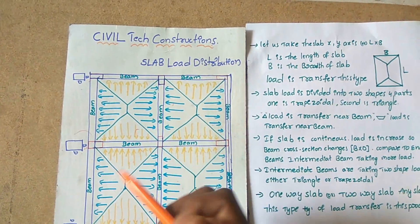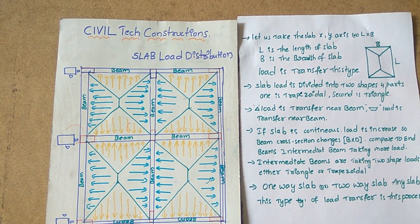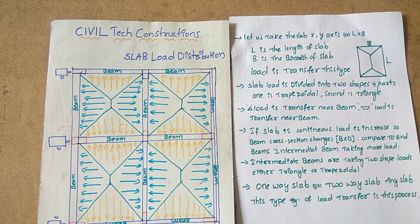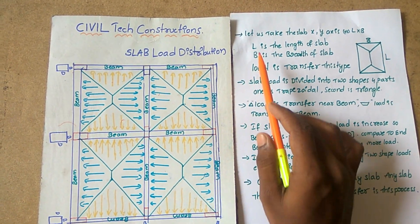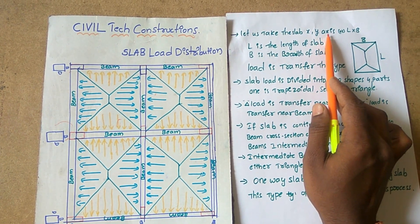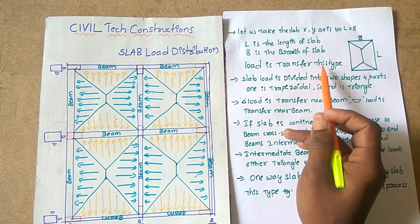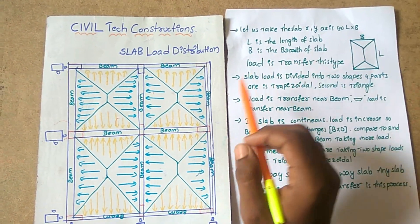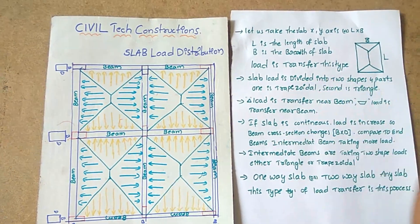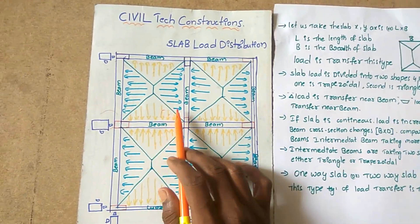Welcome to Civil Tech Constructions. Today we are learning how the slab load is distributed. Let us take the slab as x and y axis, or L into B, where L is the length of the slab and B is the breadth of the slab. The load is transferred as shown in the figure of L into B.